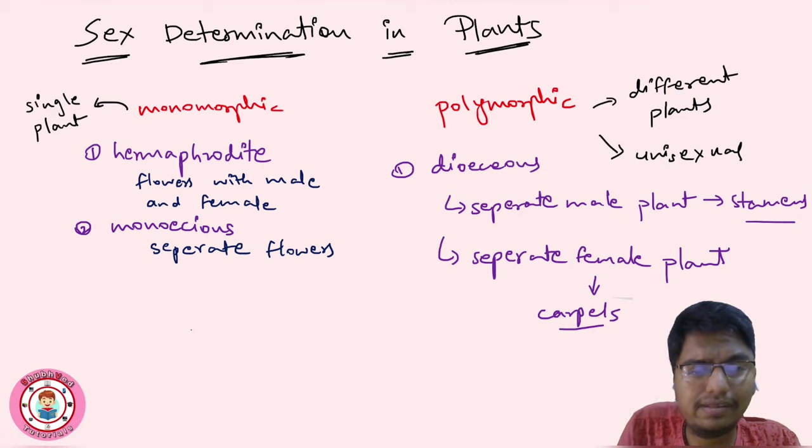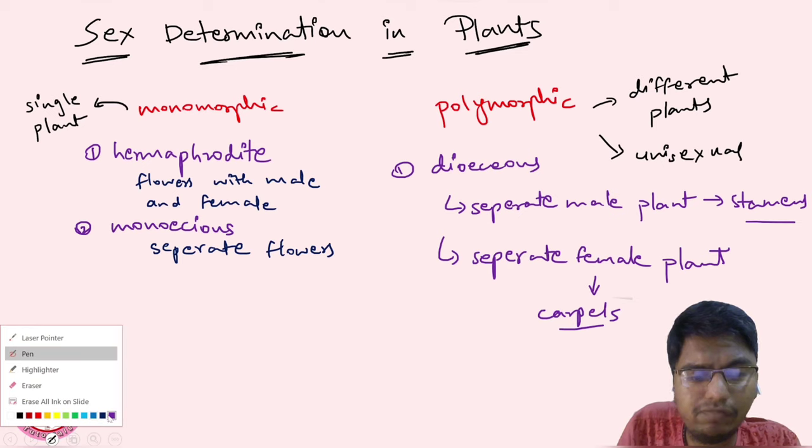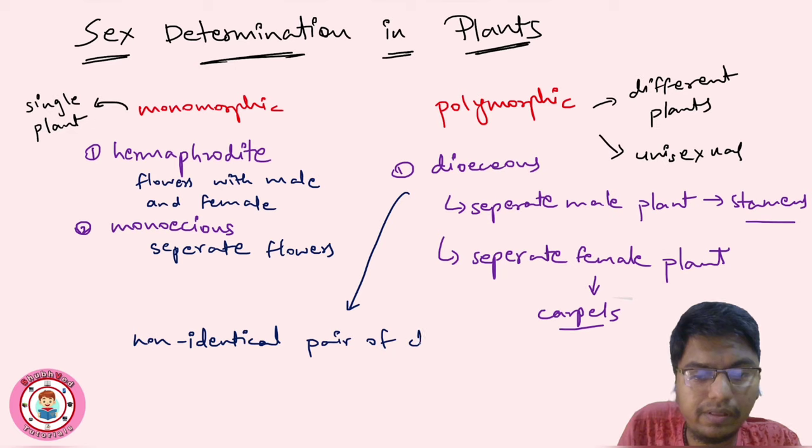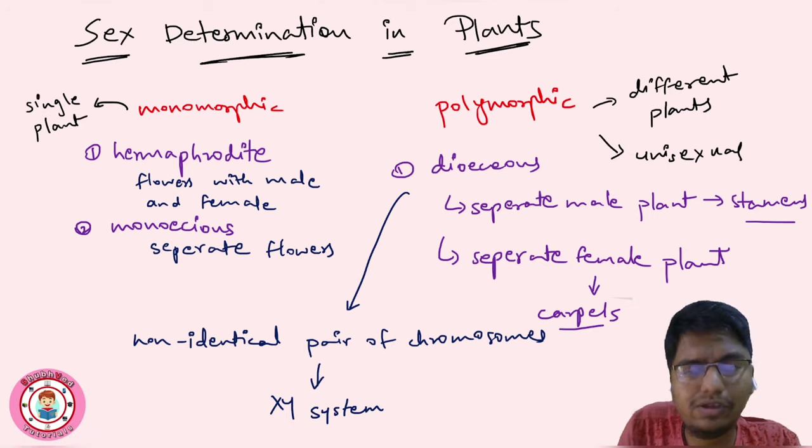Dioecious plants are same like humans - they are specific. They have non-identical pair of chromosomes, some plants not all, for sex determination. Dioecious plants have non-identical pair of chromosomes for sex determination, and a large proportion is of XY system. As we know, XX is female and XY is male. That is the case with these plants and the whole sex determination thing.